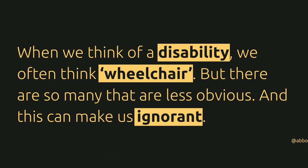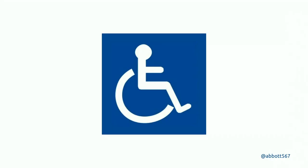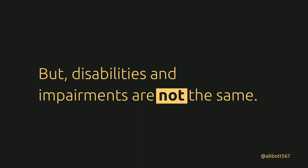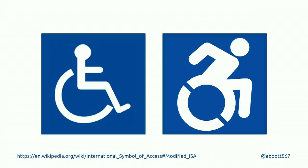The problem is that when we think of disability, we often think of a wheelchair, but there are so many that are less obvious and that can make us ignorant. A lot of the reason is the internationally recognized symbol for disabled people. But disabilities and impairments aren't the same thing, which is why that disability icon is a bit confusing — it's a one-catch-all and you might not need a wheelchair. It doesn't really take everyone into account.